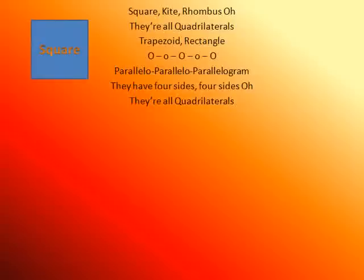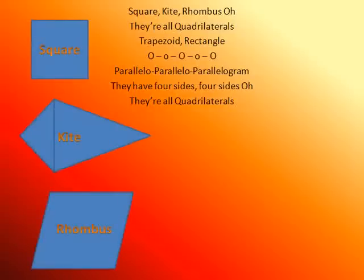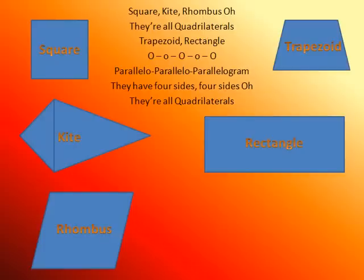Square, kite, rhombus — they're all quadrilaterals. Trapezoid, rectangle. Parallelogram, they have four sides, four sides. They're all quadrilaterals.